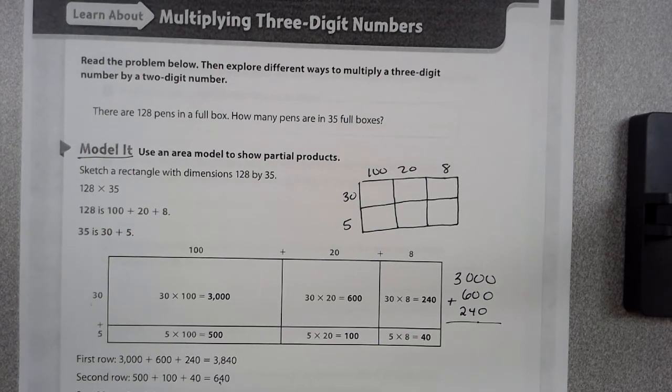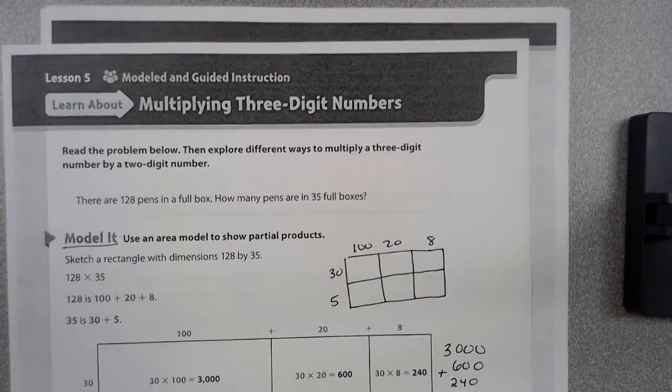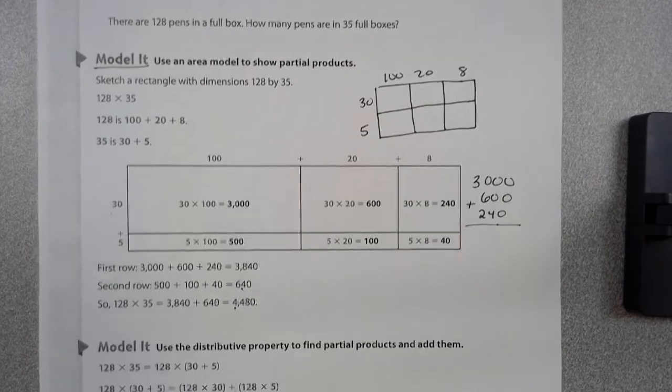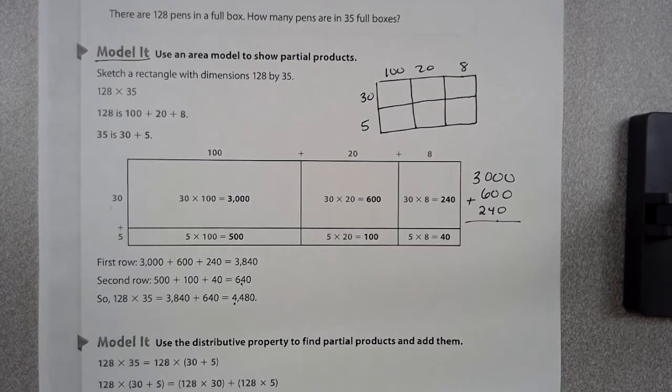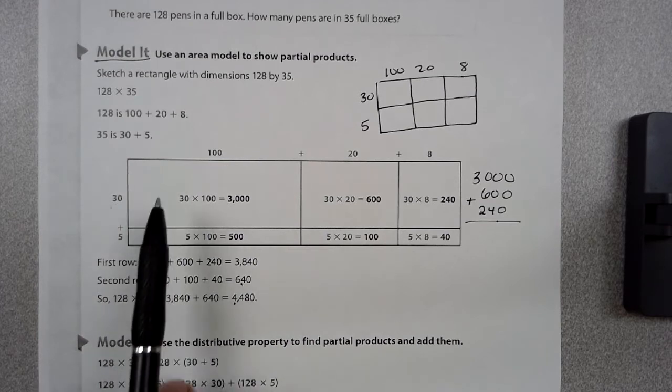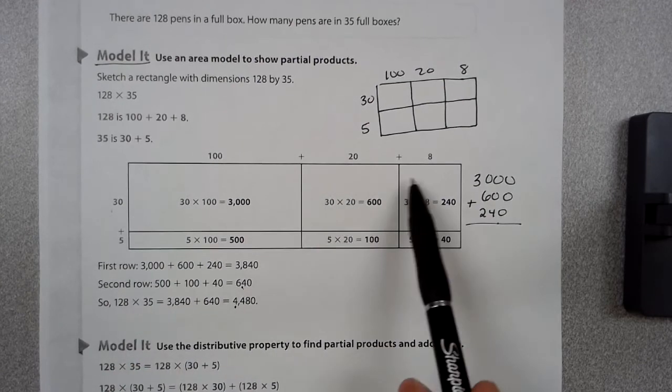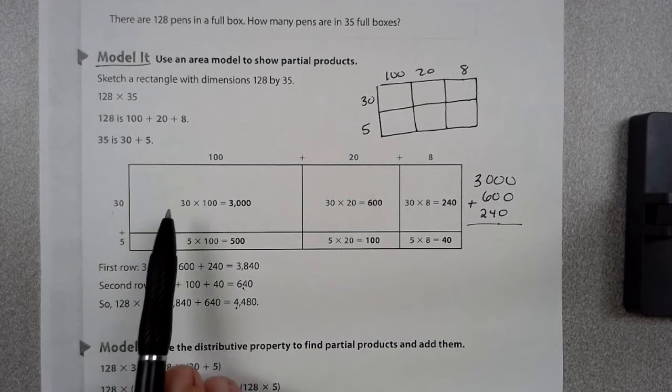Now what we're going to do is we are going to look at what is in front of us, and we're going to answer the questions on page 37. The question says, why is the area model divided into six sections? So you have one, two, three, four, five, six. Why is this area model divided into six sections?